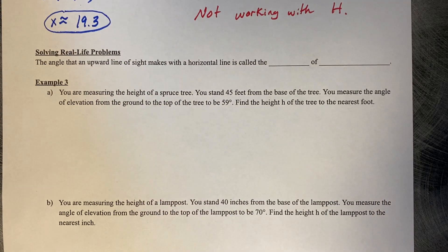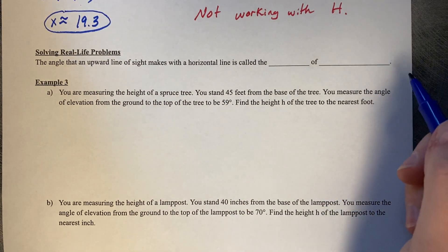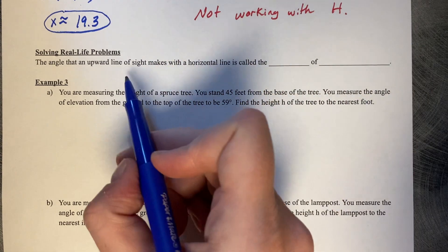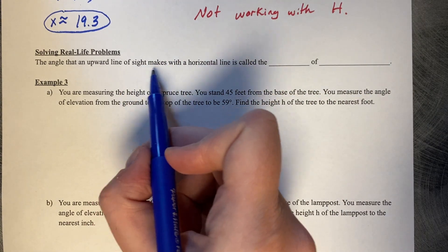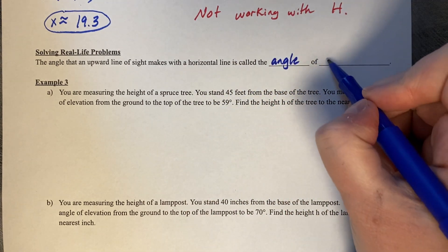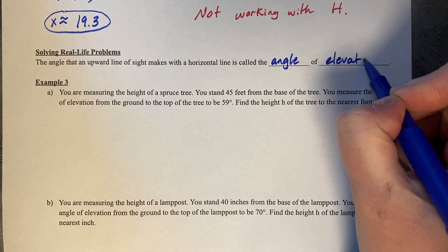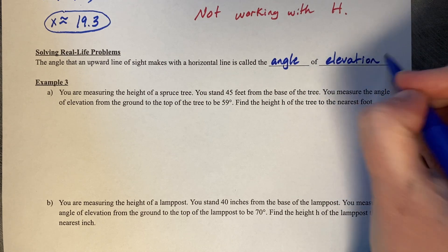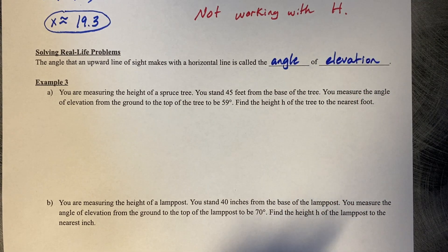Let's try solving real-life problems. The angle that an upward line from a site makes with a horizontal line is called the angle of elevation.